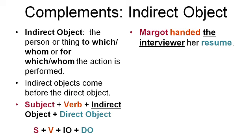Here's an example: Margo handed the interviewer her resume. Margo is the subject. Handed is the verb. What did Margo hand? Let's look at the direct object first — she handed her resume. Resume is the direct object because it is the thing that was handed. Now who did she give the resume to? The interviewer. Therefore, the interviewer is the indirect object — it is the person to whom something was given.